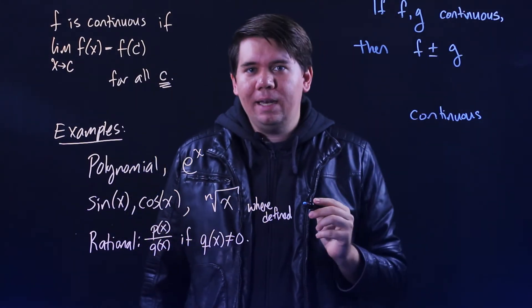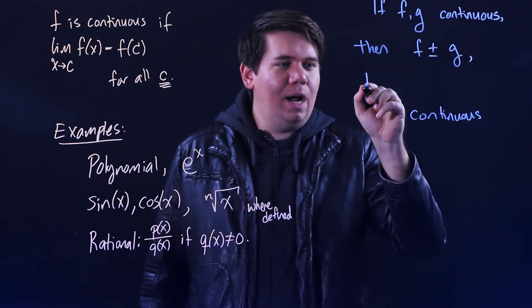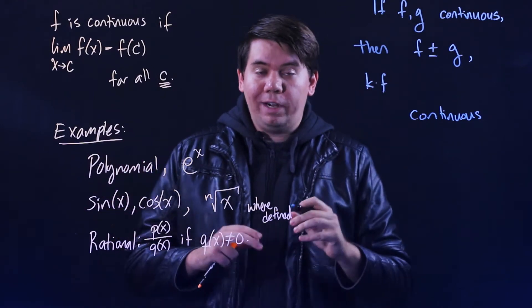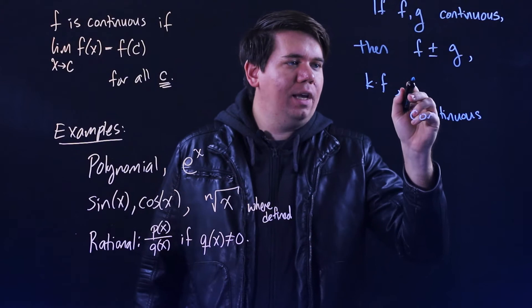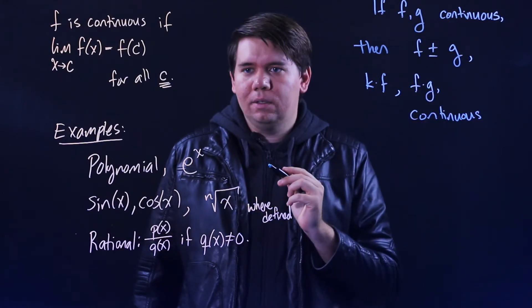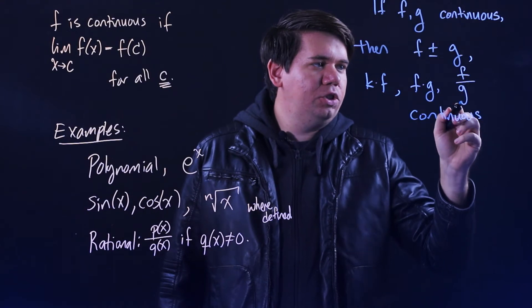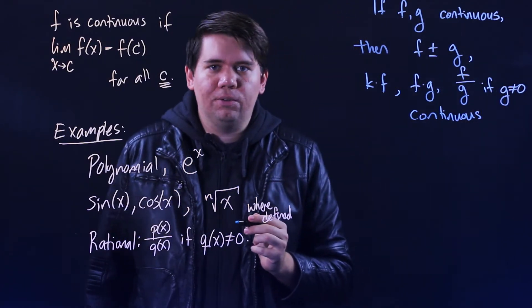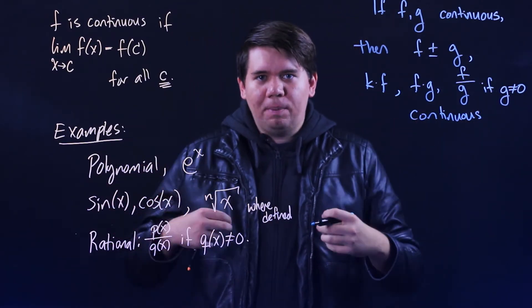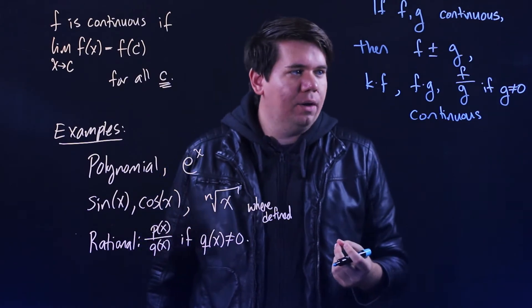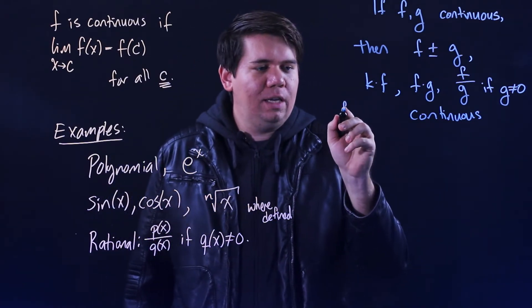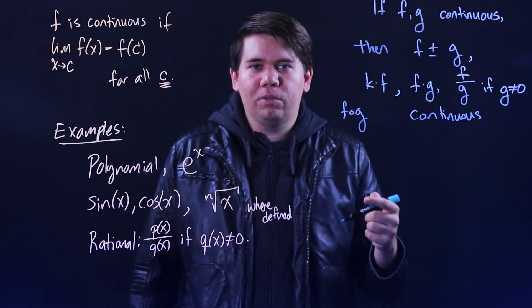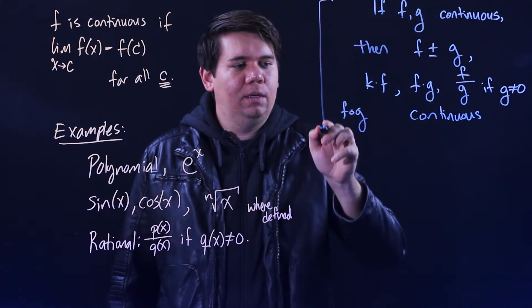Same for f minus g, or for some kind of constant times f. If f is continuous, then 2 times f is continuous, or half of f is continuous. Or f times g. Or f divided by g as long as this bottom is not zero, as long as the g is non-zero. So combining continuous functions spits out functions that are continuous as well. One more way you can combine functions, you can take a composition of two functions. You do the function g and then you plug it into the function f. f composed of g, that will still be continuous as well.